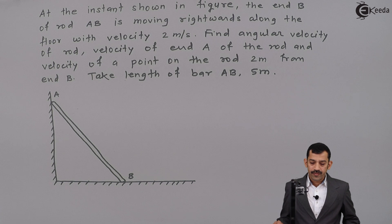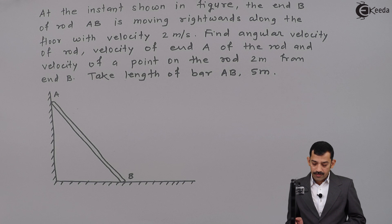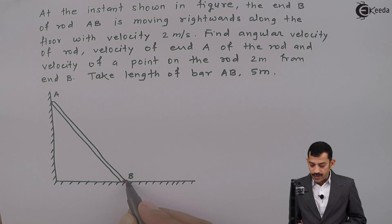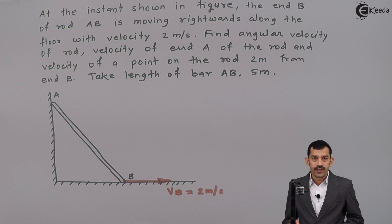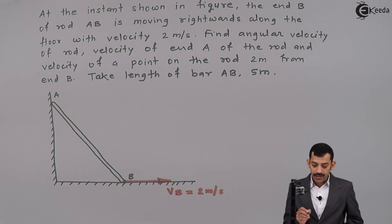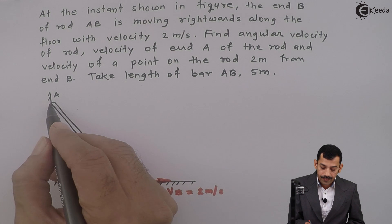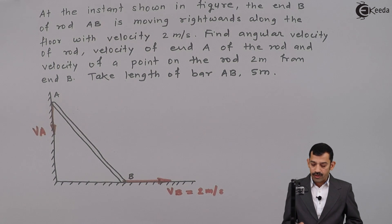In the problem, end B of rod AB is moving rightwards along the floor with velocity of 2 meters per second. That means end B is moving rightward, so VB equals 2 meters per second. Now a vertical wall and horizontal floor is given — single body problem. If end B slides rightward, end A has to slide in the downward direction. Therefore, the direction of linear velocity of point A is vertically downward along the wall. VA is unknown; only VB equals 2 meters per second is known.